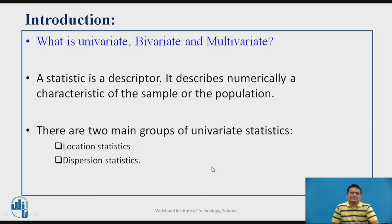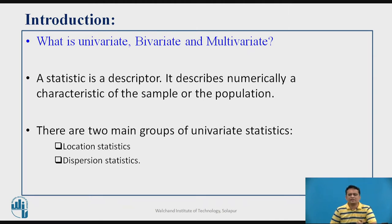When you talk about analysis, the data available may be univariate, bivariate, or multivariate. If you are analyzing only a single attribute, that becomes univariate analysis. If you are analyzing two attributes simultaneously, that becomes bivariate analysis. If more than two attributes are there, that becomes multivariate analysis.